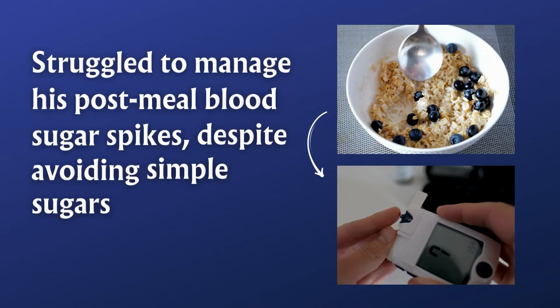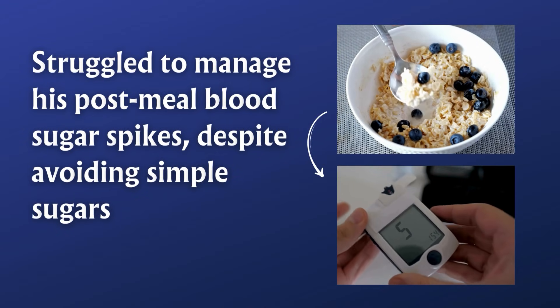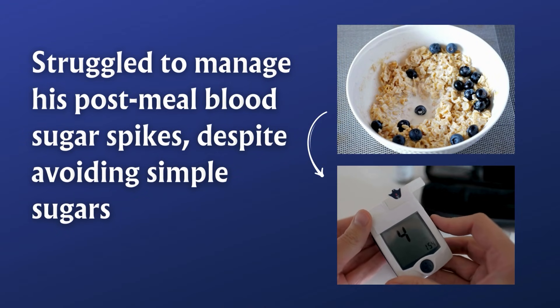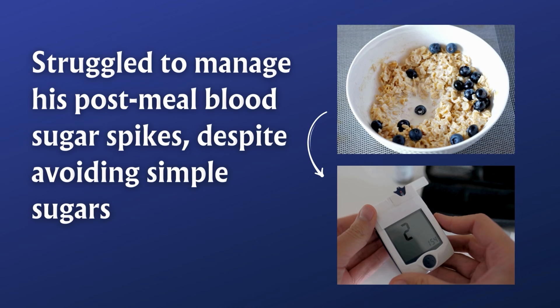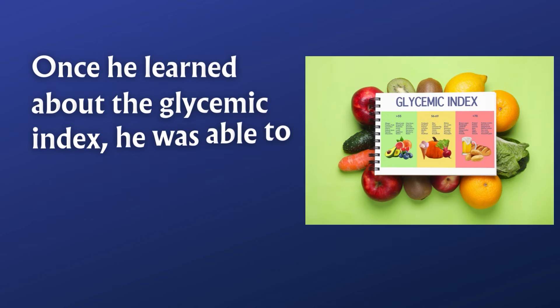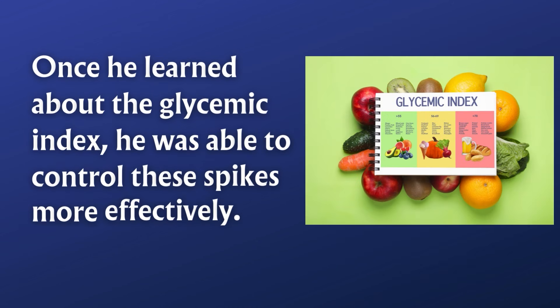One of my patients with Type 1 diabetes was having trouble managing his post-prandial high blood sugar — basically, after eating, his blood sugar would skyrocket, affecting his average blood sugar. Once he understood the concept of glycemic index, he was able to get his post-prandial high blood sugar under control and thereby decrease his average blood sugar.